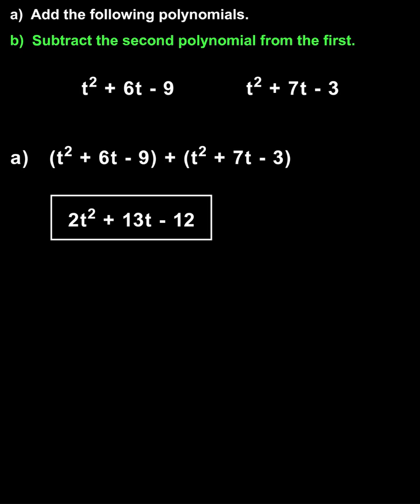In part B, we're asked to subtract the second polynomial from the first. So we have parentheses t squared plus 6t minus 9 minus parentheses t squared plus 7t minus 3. Notice that the second polynomial is subtracted from the first, and again, notice that we use parentheses around each polynomial.